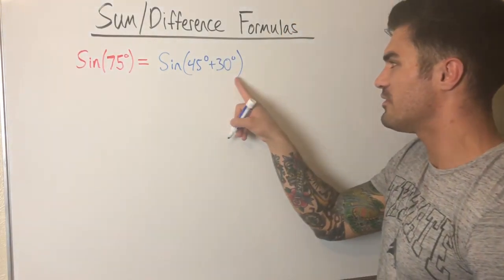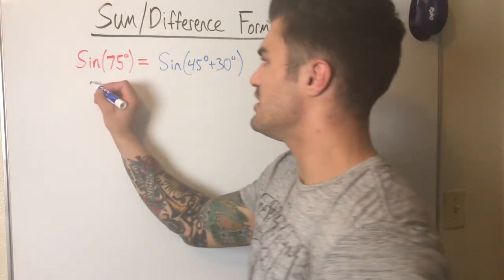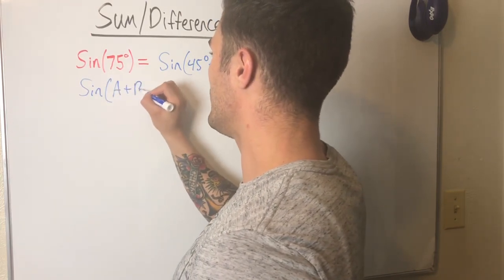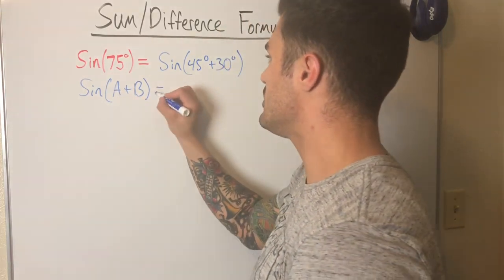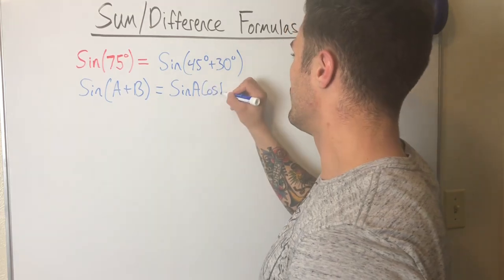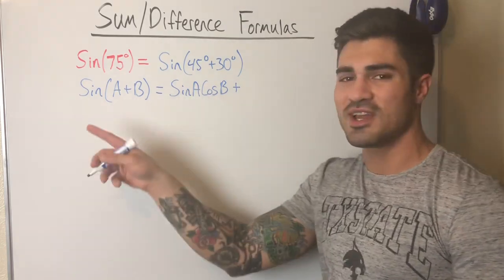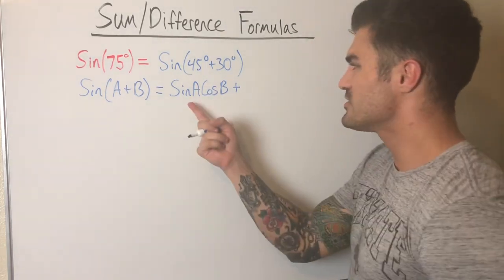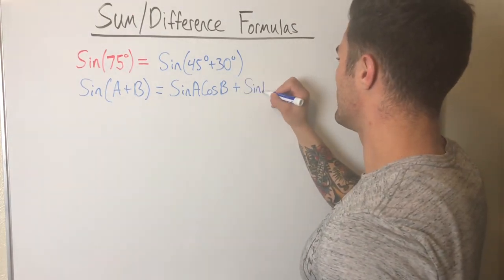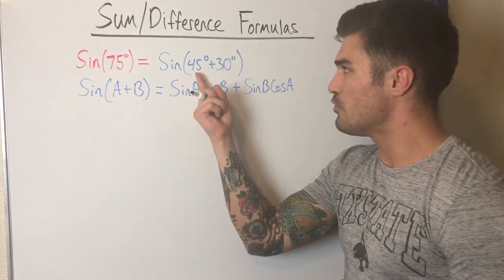Here's the formula I'm going to use: sine of (A + B) equals sine A times cosine B plus cosine A times sine B. I remember it because with sine the addition formula has a plus, and with cosine it's the opposite sign — that's my memory trick.